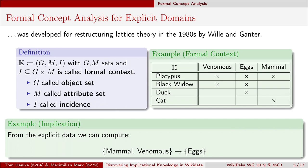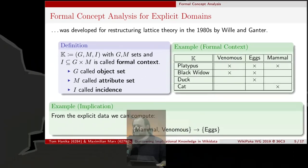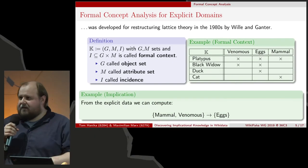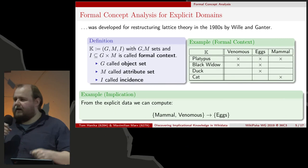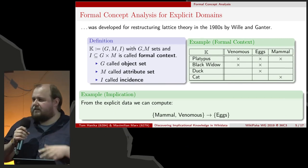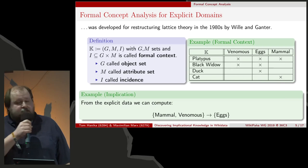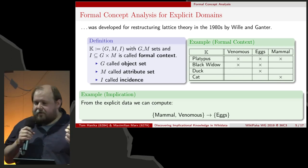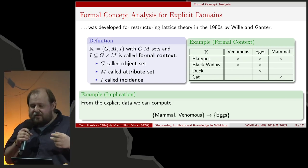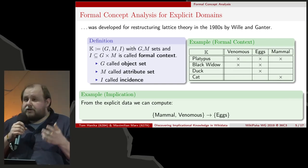Formal Concept Analysis was developed in the 1980s by Rudolf Wille and Bernhard Ganter, who were restructuring lattice theory. Lattice theory has two meanings in mathematics: one refers to a grid with lattices; the other refers to order relations. Lattices are particular orders which can be used to represent propositional logic — easy rules like 'when it rains, the street gets wet.' The data representation they used is called a formal context: a set of objects, a set of attributes, and an incidence relation indicating which object has which attributes.